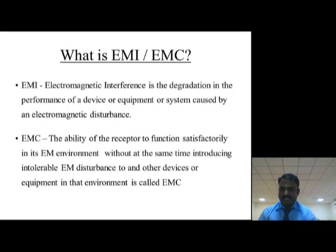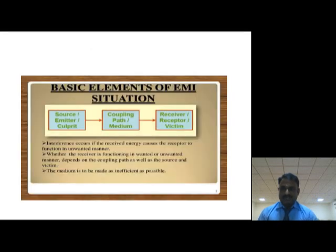These are the basic fundamentals of EMI and EMC. Now we are going to discuss about the basic elements of an EMI situation. It has three major elements: the first one is source, the next one is coupling path, and the third one is receiver or receptor.